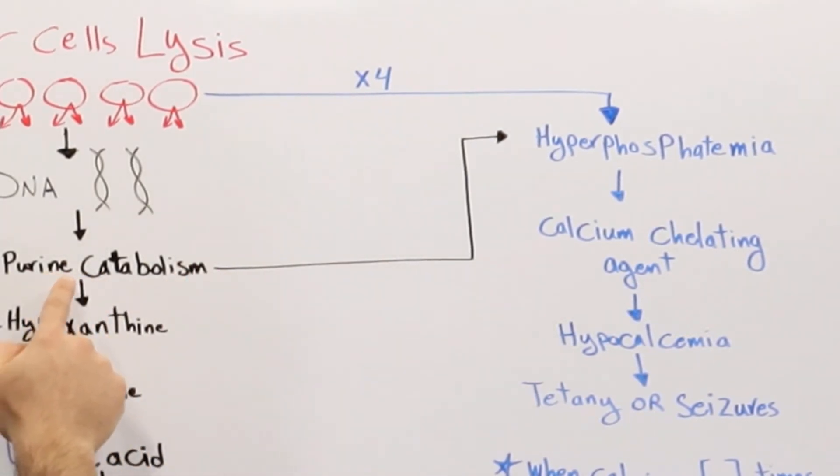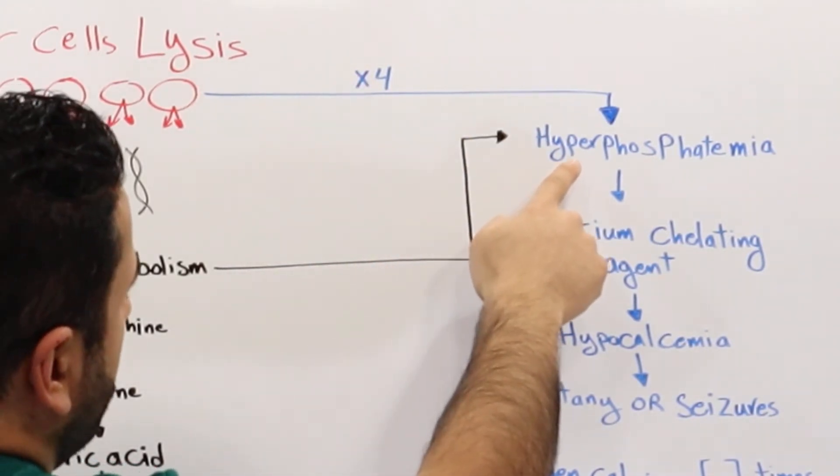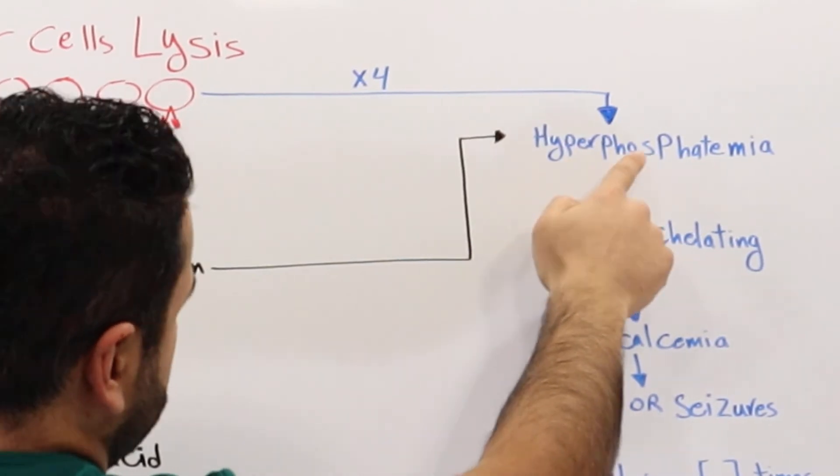From the purine catabolism, because DNA contains phosphate as well, we end up having through these two pathways high amounts of phosphate in the blood, which in other words is hyperphosphatemia.